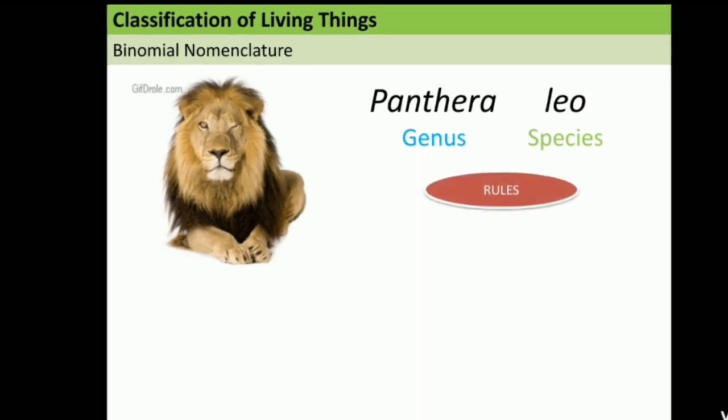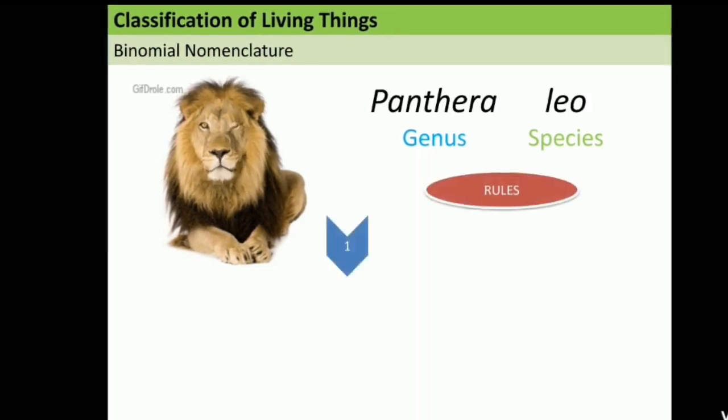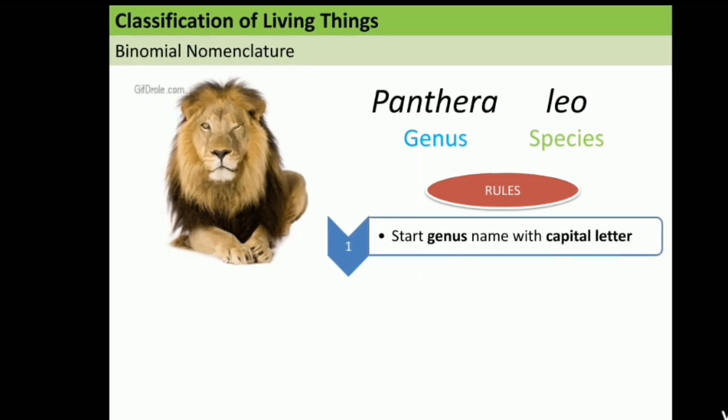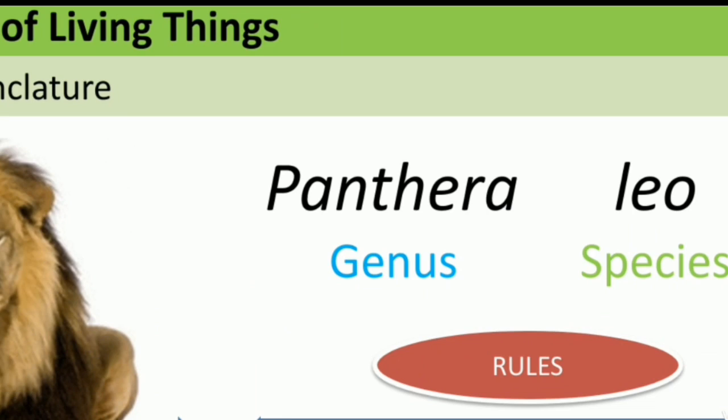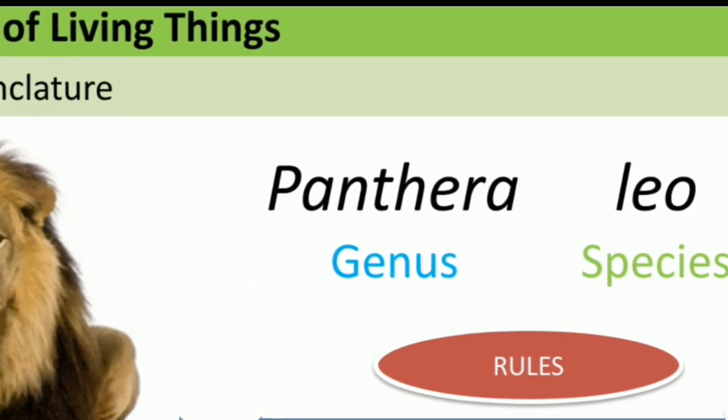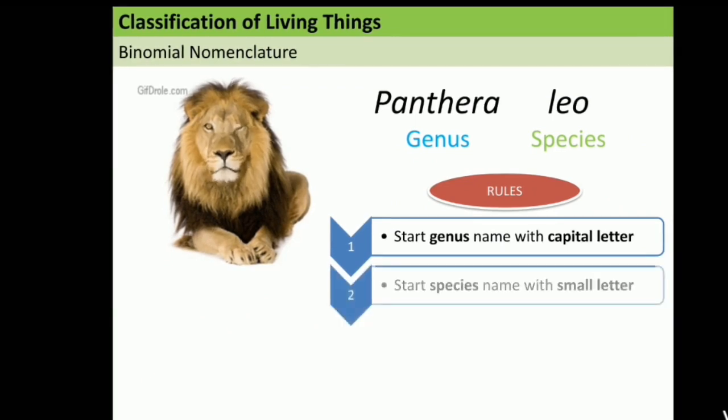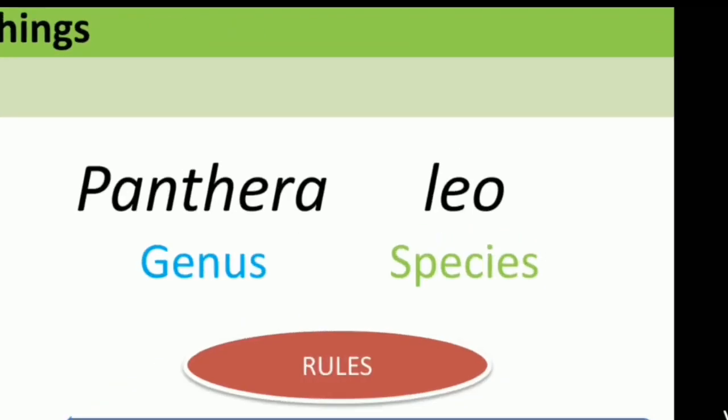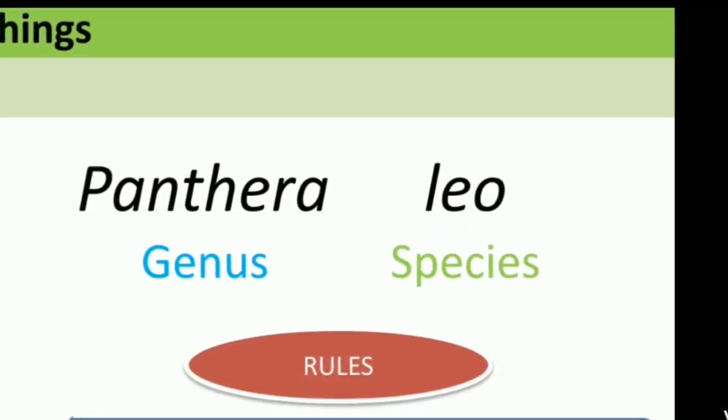So the rules of binomial nomenclature, the first rule is start genus name with capital letter. So look at the genus name, it starts with the capital letter. And then the second, start species name with small letter. And the second word is leo, it is the species and it starts with the small letter.